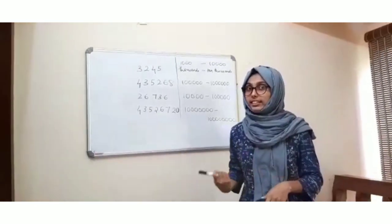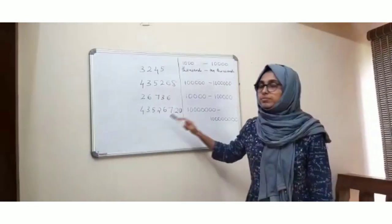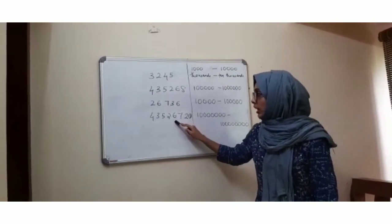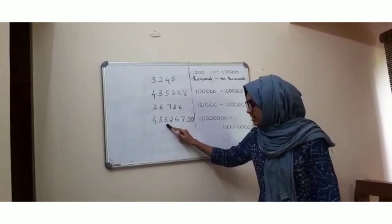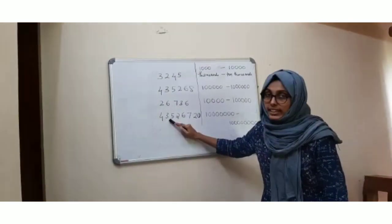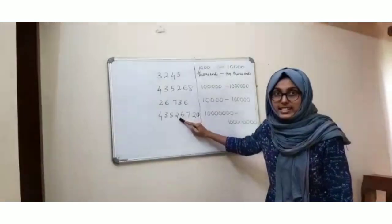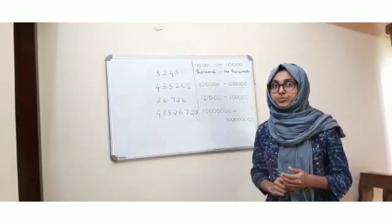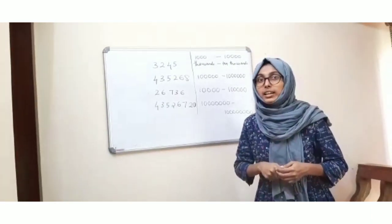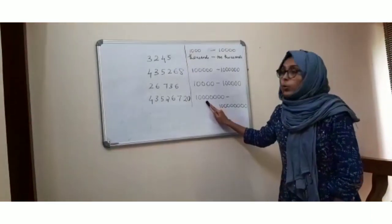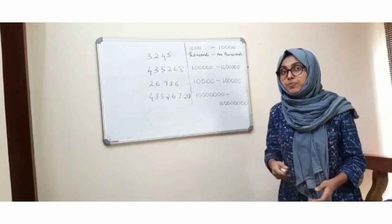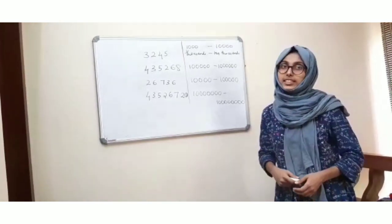So now another example. Which is this number? Going through 1s, 10s, 100s, 1000s, 10,000s, lakhs, 10 lakhs, 6 crores — so 4 crores, 35,26,720. Now where will this number come? This will come between 1 crore and 10 crores. Is it clear now?